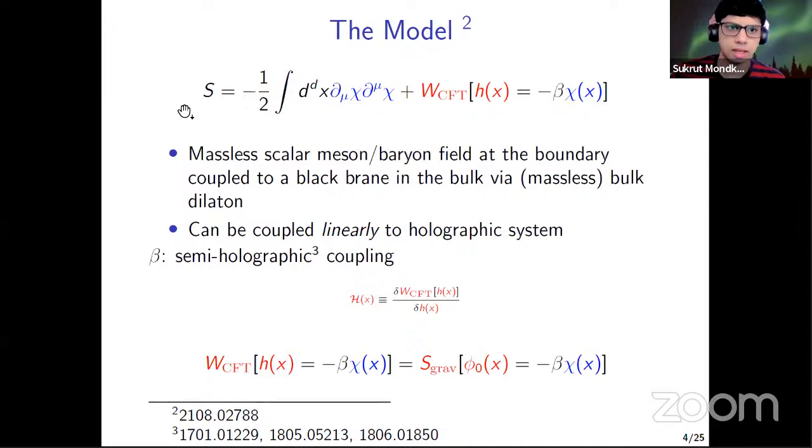So at the first step, instead of kinetic theory, we just couple a massless scalar field with a strongly coupled holographic theory. So that is the model that I will describe now, which is in the paper. So in this model, this is the action of the system. So first term, so chi is the massless scalar field. So first term is the action for massless scalar field. And then the other thing is this strongly coupled holographic CFT. So W_CFT is the action for this strongly coupled CFT.